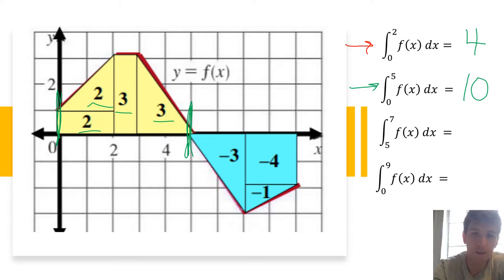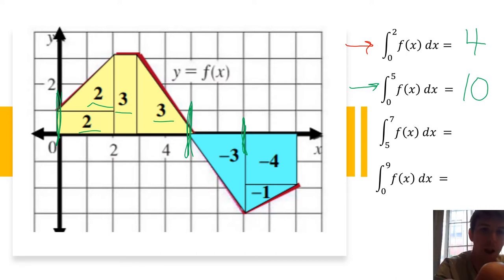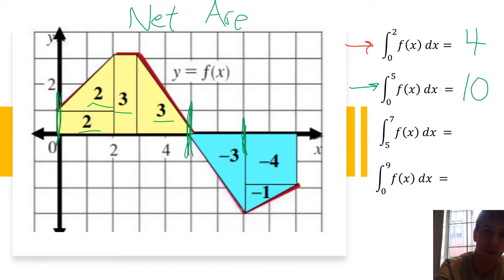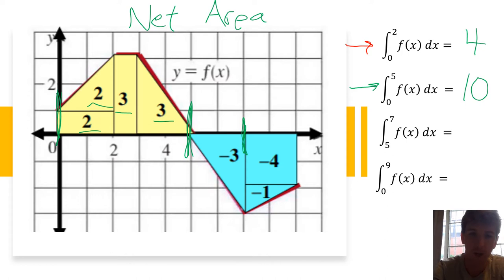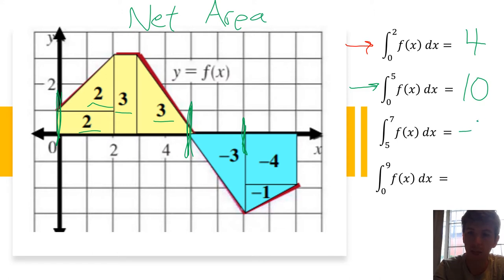Next: from 5 to 7. We're looking for net area here. Net area treats regions below the x-axis as negative, so we don't need to do anything special — negative 3 is going to be the answer. From 5 to 7, the area between the curve and the x-axis is negative 3.